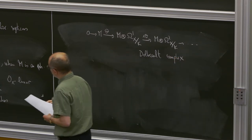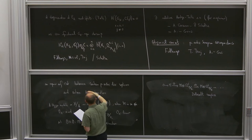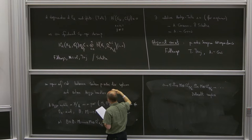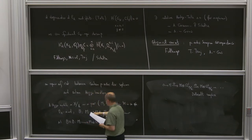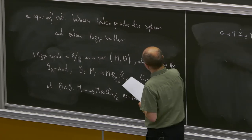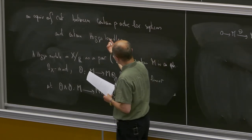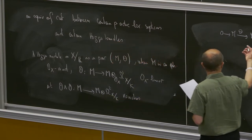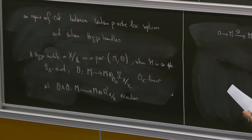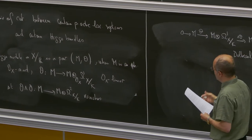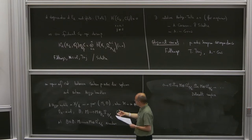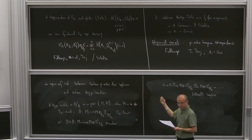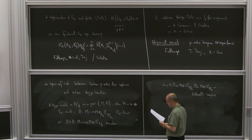This is like a module with an integrable connection except that instead of the Leibniz rule it is O_X-linear. Hence you can form a complex from such a map, which we call the Dolbeault complex, also called the Higgs complex.